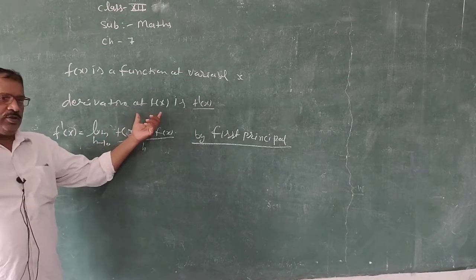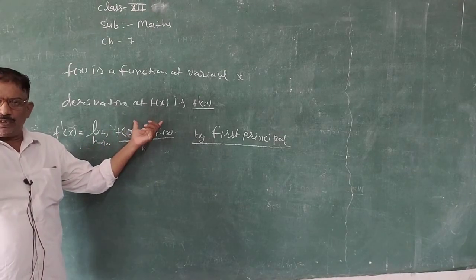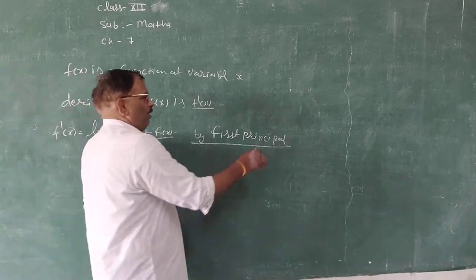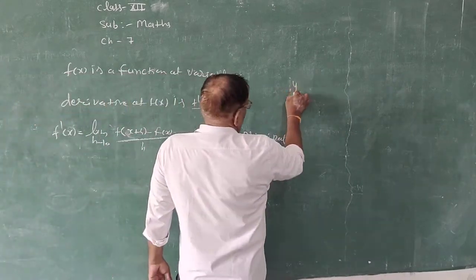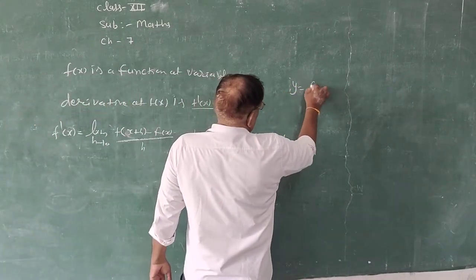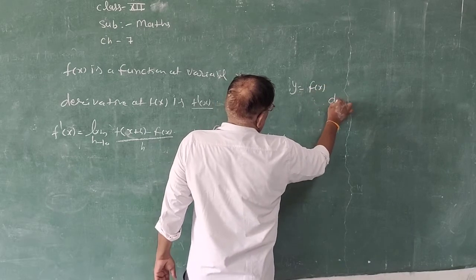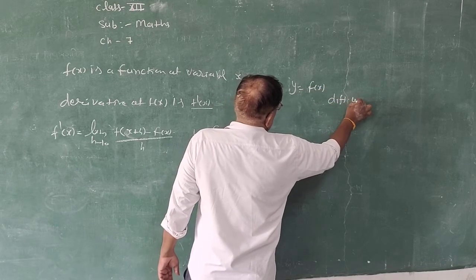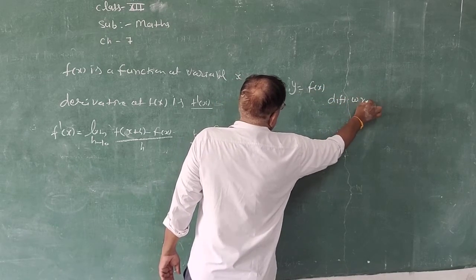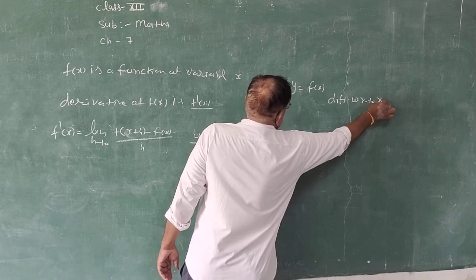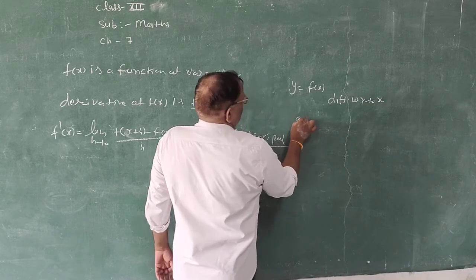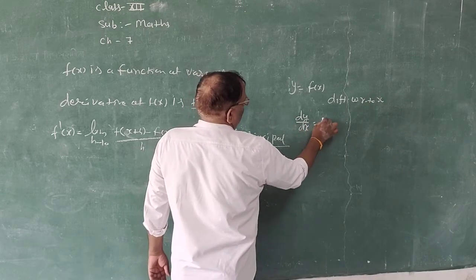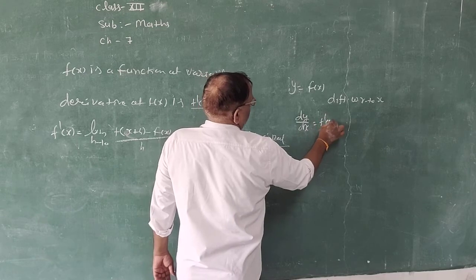If the variable is x, then dy upon dx will be found. If y is a function of f, that is y = f(x), then differentiation with respect to x gives dy upon dx = f'(x).